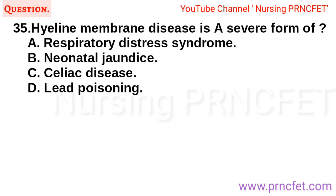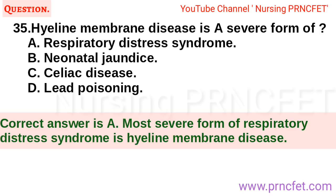Question 35: Hyaline membrane disease is a severe form of: A. Respiratory distress syndrome. B. Neonatal jaundice. C. Celiac disease. D. Lead poisoning. Correct answer is A. The most severe form of respiratory distress syndrome is hyaline membrane disease.